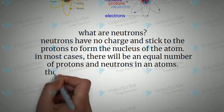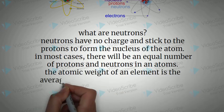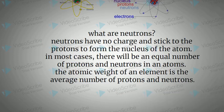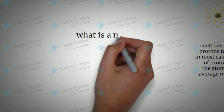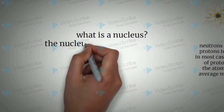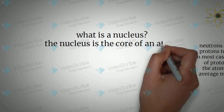In most cases, there will be an equal number of protons and neutrons in an atom. Atomic weight of an element is the average number of protons and neutrons.